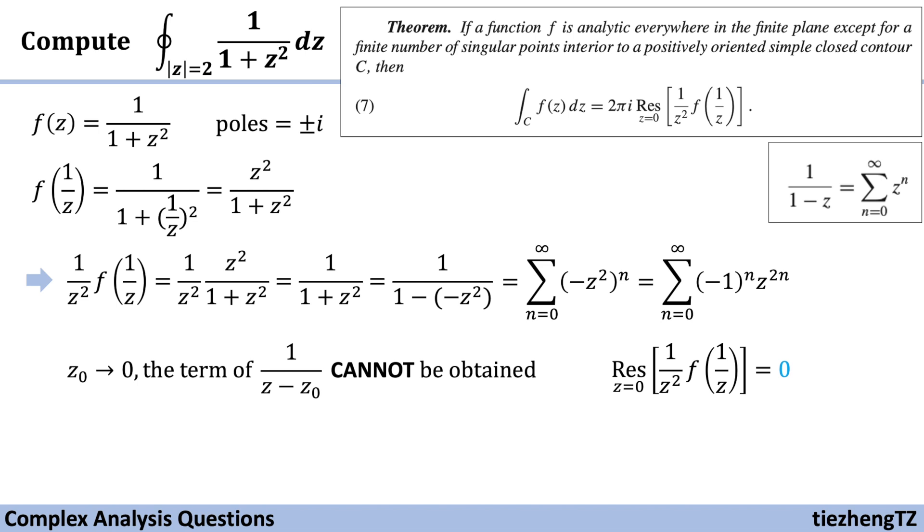So back to our question, we can just say the integral 1/(1+z²) dz in the given range |z|=2 equals 2πi times the residual, which is 0. So the final answer for this question is just 0.